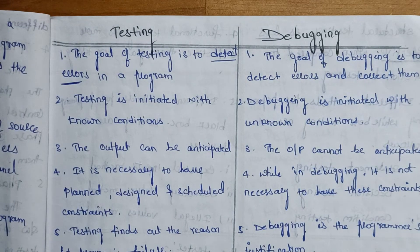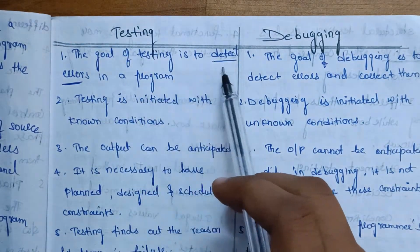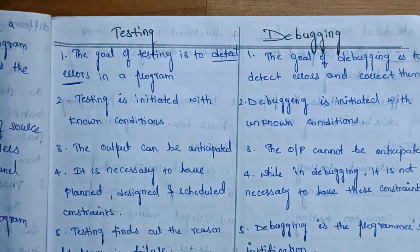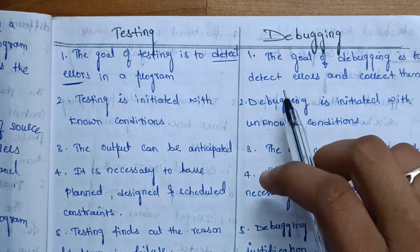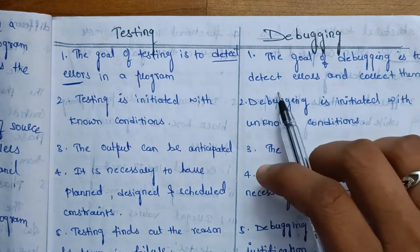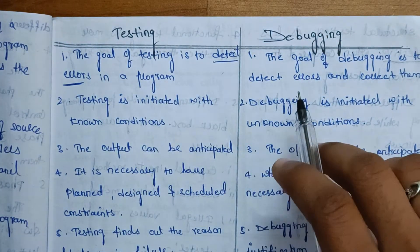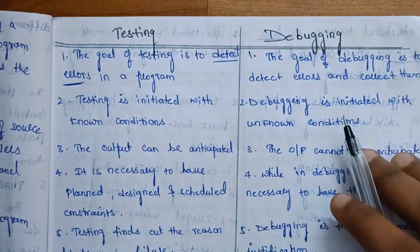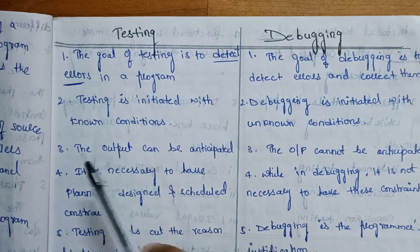So when we know testing and debugging, we need to understand what differences exist between them. The goal of testing is to detect errors in a program. In debugging, the goal is to detect errors and correct them. It is not just about detecting - in debugging you detect and then correct as well.